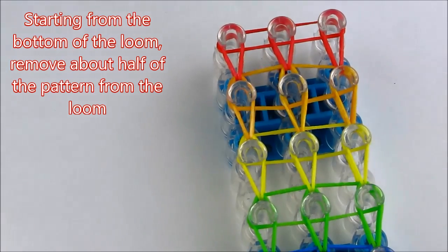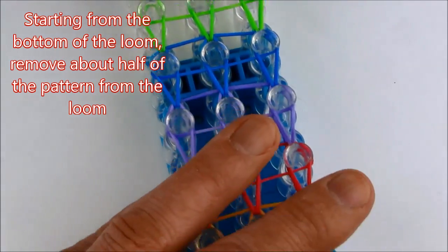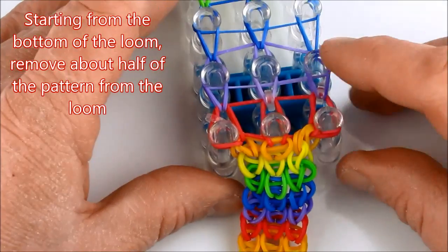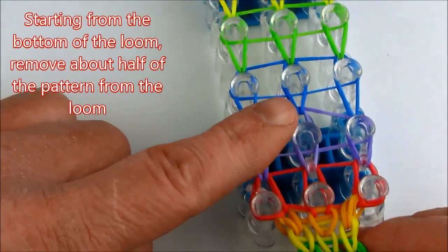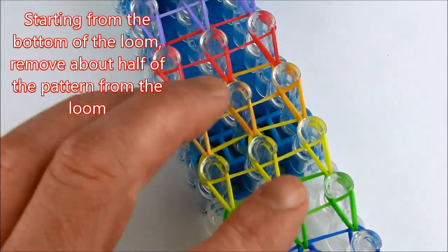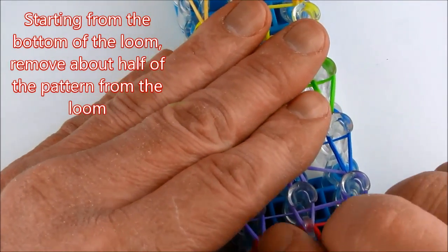Starting from the bottom of the loom, we want to remove about half of the pattern. We do not want to remove the entire pattern from the loom. If we remove the entire pattern, it will fall apart, so we only want to pull up to the halfway mark.